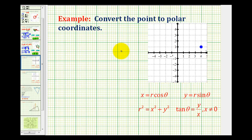Now we'll take a look at two examples of converting a point in rectangular coordinates to polar coordinates. This first example is pretty straightforward and the second one is a little more challenging.